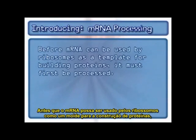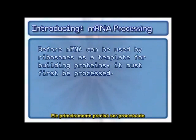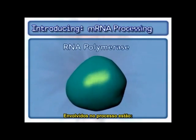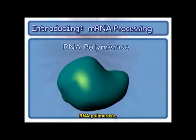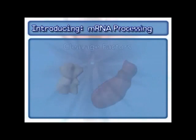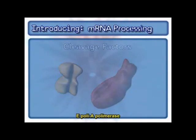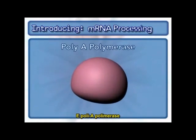Before mRNA can be used by ribosomes as a template for building proteins, it must first be processed. Key steps are the addition of a methylated cap and a polyadenylated tail. Involved in processing are RNA polymerase, cleavage factors, and poly-A polymerase.